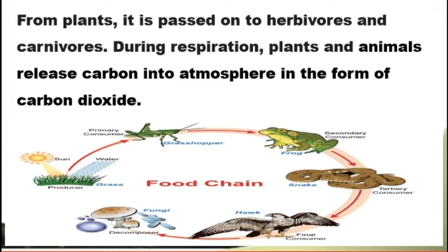From plants, the carbon passes on to herbivores and carnivores. Herbivores are animals that eat plants only. Looking at the food chain: plants are eaten by grass-hoppers — grass-hoppers are herbivores; we can take a cow as an example. The carbon present in the plant moves to the herbivore, and after the herbivore it moves to the carnivore.